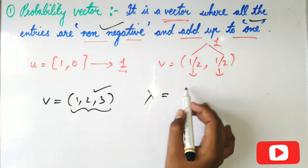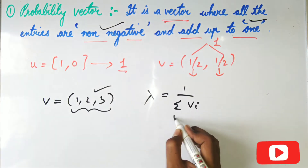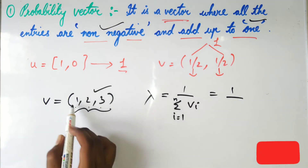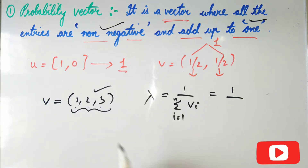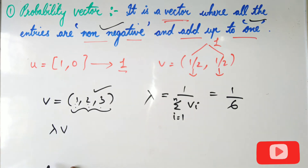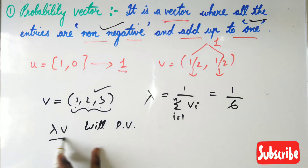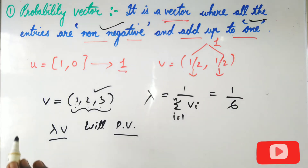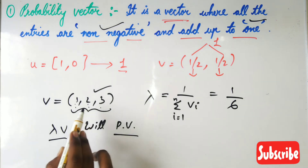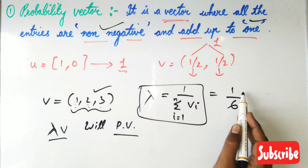However, I can introduce a scalar lambda which will convert this into a probability vector. Lambda equals 1 divided by the summation of all the components of V — that is 1/(v₁ + v₂ + ... + vₙ). Here the sum is 1 + 2 + 3 = 6, so lambda = 1/6. Then lambda·V will be a probability vector. This is a conversion process where entries are non-negative but the sum is not 1, so you multiply by lambda to make the sum equal to 1.